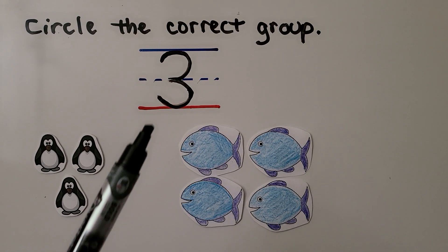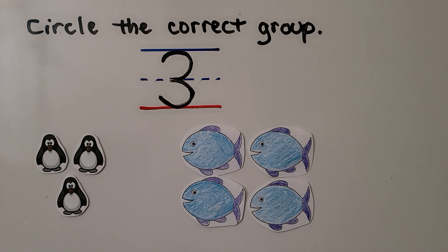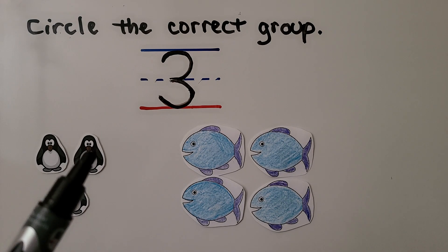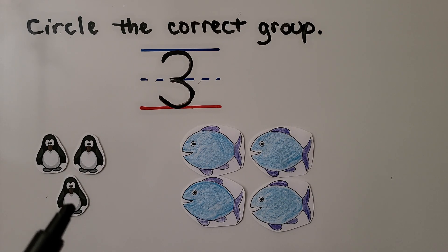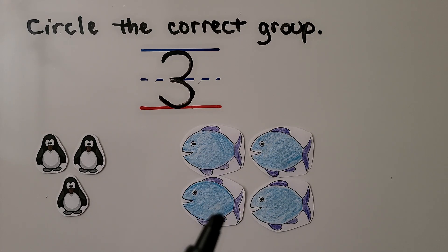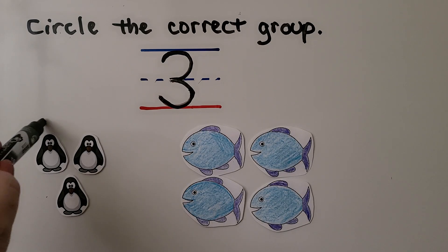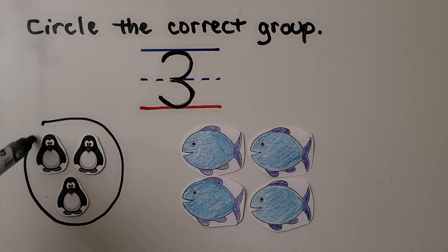Here we have the number 3 — we need to circle the correct group. Do you know which group has 3? We can count them. For the penguins, I see 1, 2, 3. For the fish, I see 1, 2, 3, 4. There are 3 penguins — 1, 2, 3. The correct group is the group of penguins.